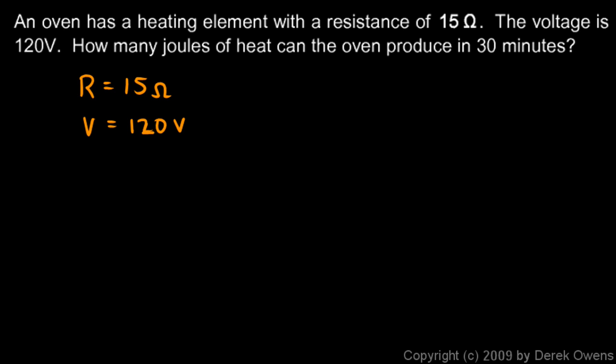We're asked how many joules of heat can the oven produce in 30 minutes. Well, let's see. We know R and V, so one thing immediately comes to mind: we can find I, the current, using Ohm's law. So let's do that: 120 volts divided by 15 ohms, just taking Ohm's law solved for I. I is V over R, and we do that calculation and we get 8 amps.